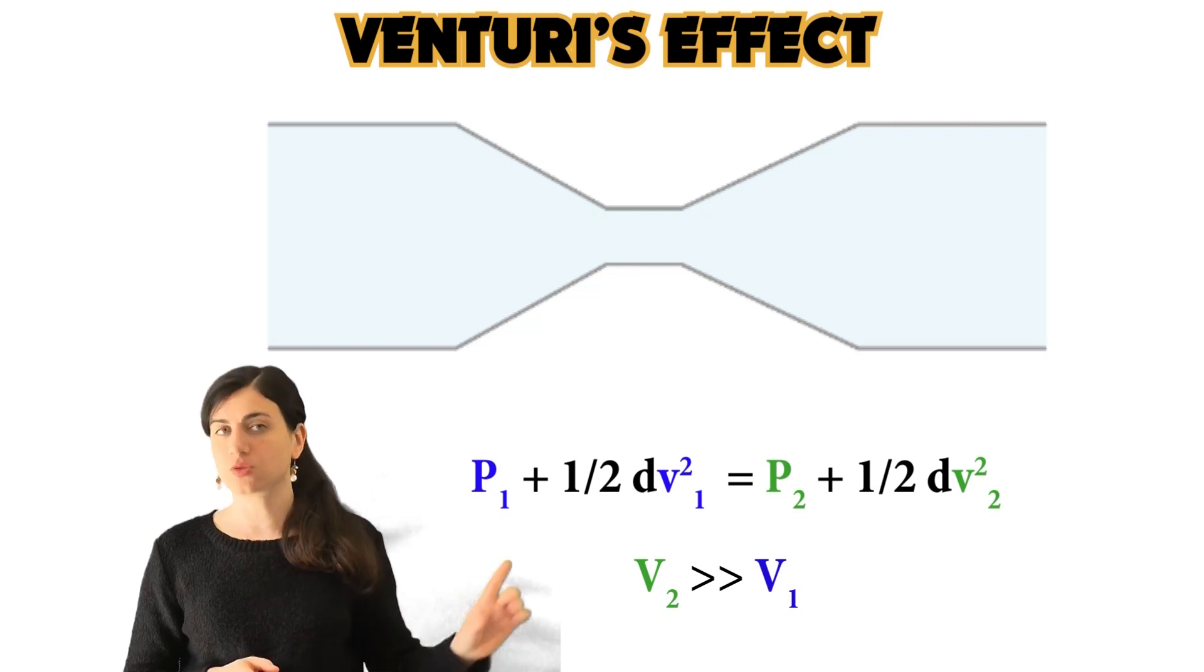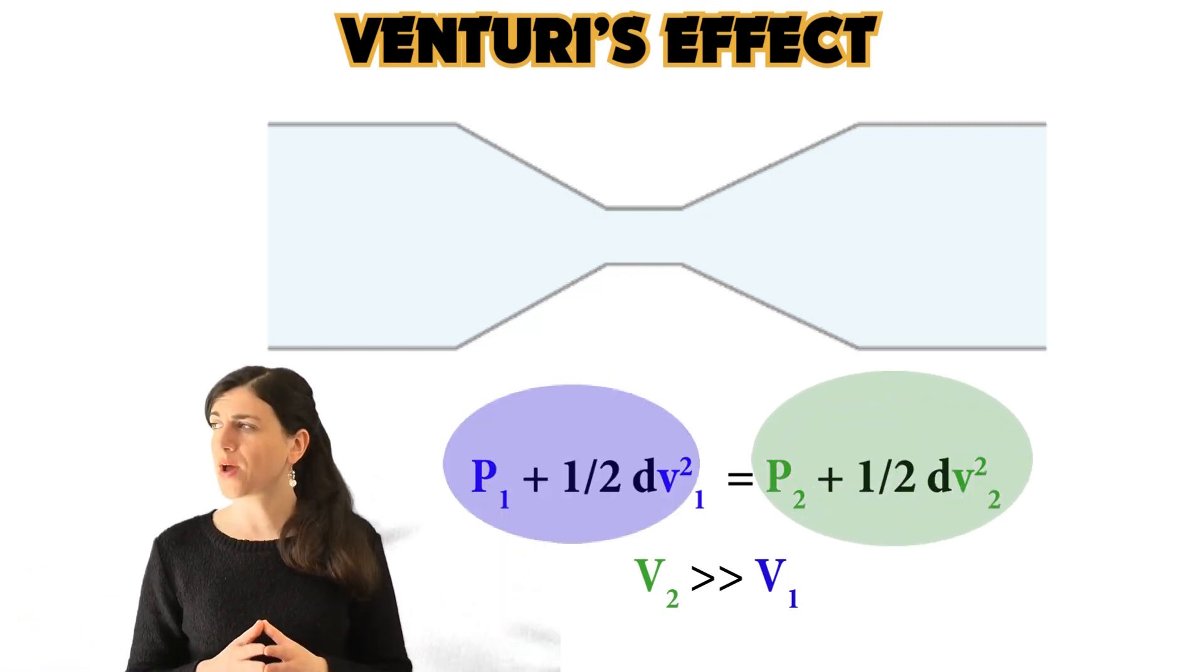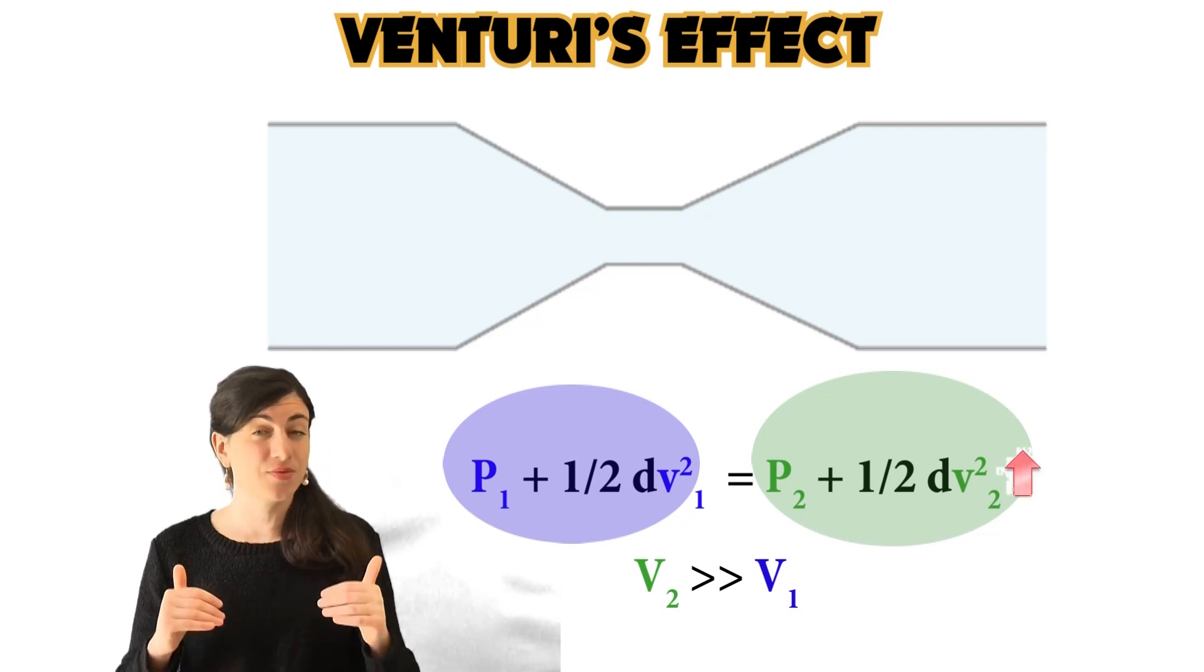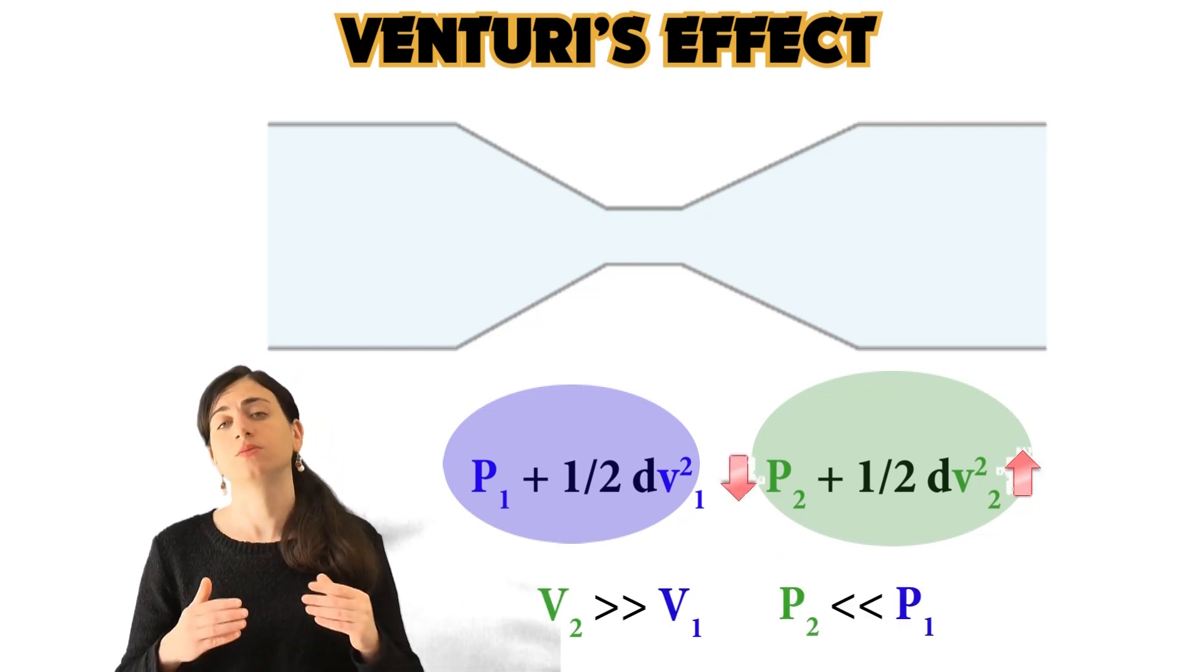So now, how can this part of the equation be equal to this other part of the equation, if the speed is different? The only way these two terms can be the same is that the pressure, P2, will decrease.